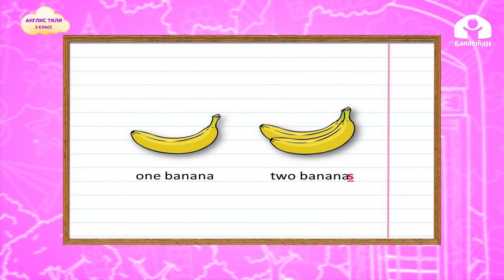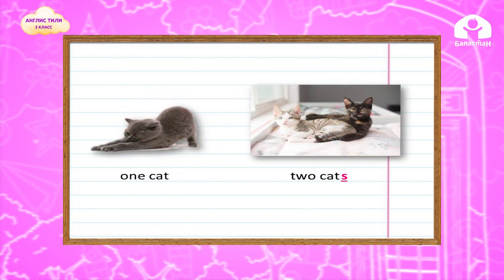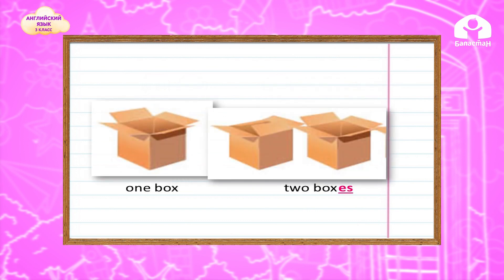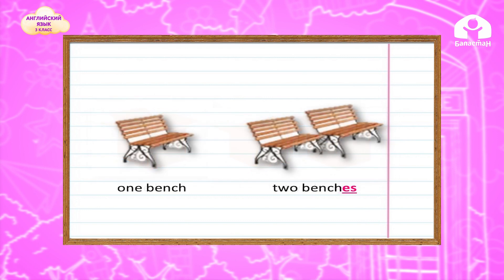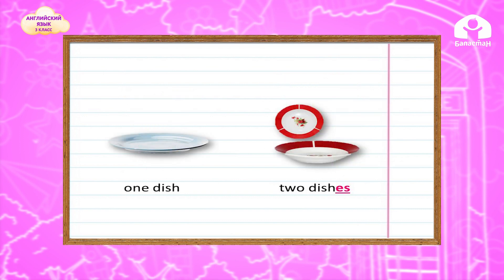After voiceless consonants, the sound is S — for example: two books, two cats, two zips. After whistling consonants, the sound is IZ — for example: two boxes, two benches, two glasses, two dishes.